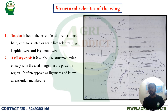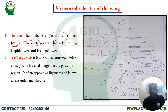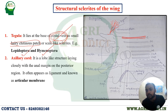The tegula is a chitinous hair structure. It is present in Lepidoptera and Hemiptera. Its important exam point is its location — it lies at the base of the costal vein. This is the key fact: the tegula lies at the base of the costal vein. Just visualize the picture of the tegula near the costal vein.